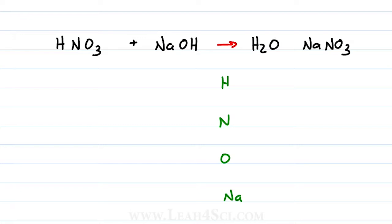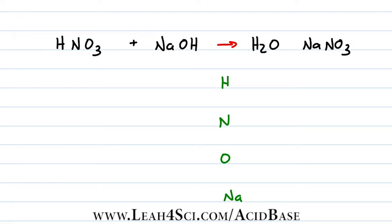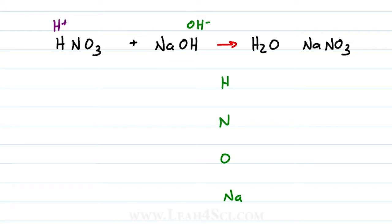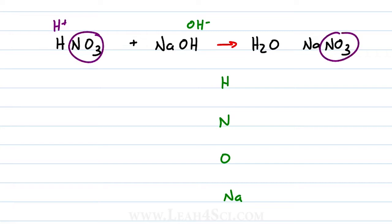Think about what you have in your acid. An Arrhenius or Brønsted-Lowry acid is simply an H+ bound to some conjugate. The other thing to recognize is that our acid has a polyatomic ion — nitrate. Nitrate does not react or change; it's simply something that dissolves in solution, so we have nitrate in the reactants and nitrate in the products.